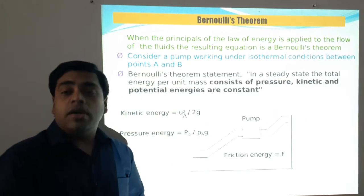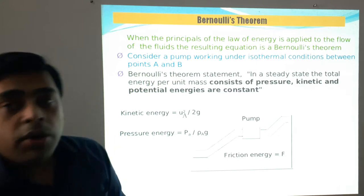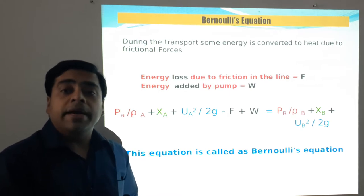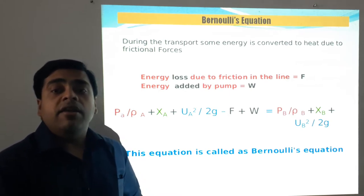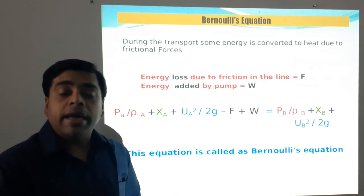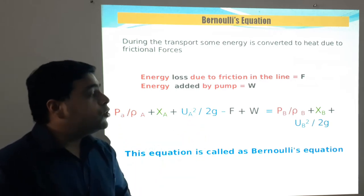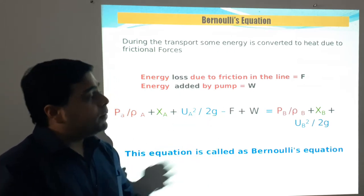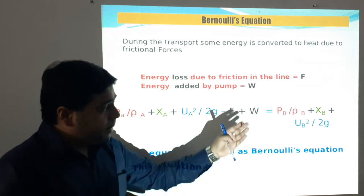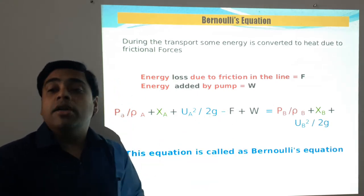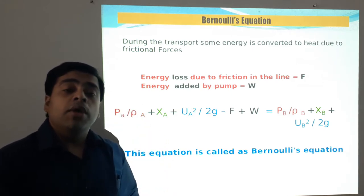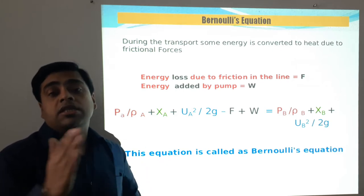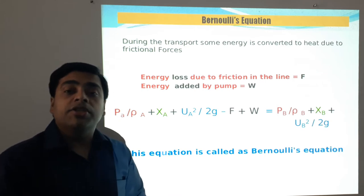Next we studied the Bernoulli's theorem and arrived at Bernoulli's equation — a very important equation. I want to recap it. Bernoulli's equation is: PA/ρA + XA + UA²/2g − F + W = PB/ρB + XB + UB²/2g. For the measurement of fluid flow, Bernoulli's equation comes into play, and we will see its application shortly.